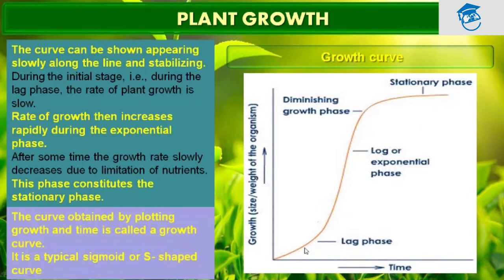During the initial stage, which we call the lag phase, the rate of plant growth is low. The rate of growth then increases rapidly during the exponential phase. After some time, the growth rate slowly decreases due to the limitation of nutrients. Because of this nutrient limitation, the growth rate declines and reaches a saturated level — this constitutes the stationary phase.